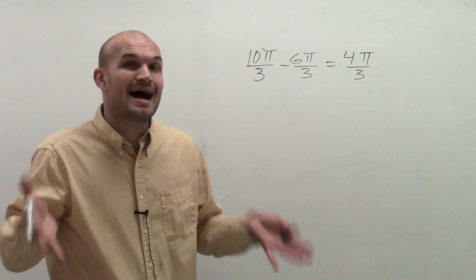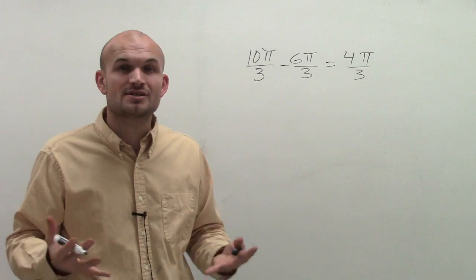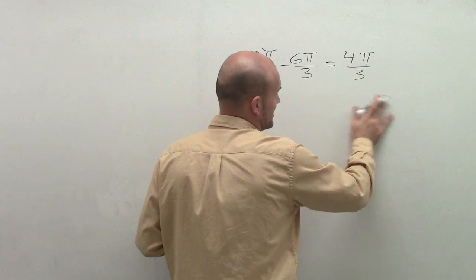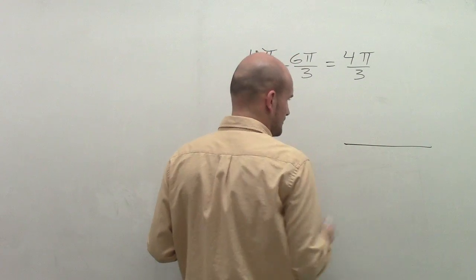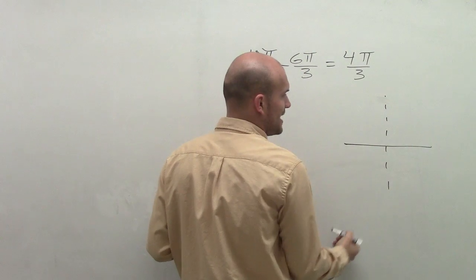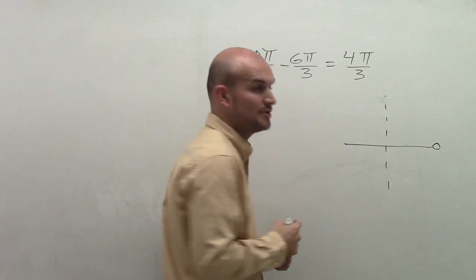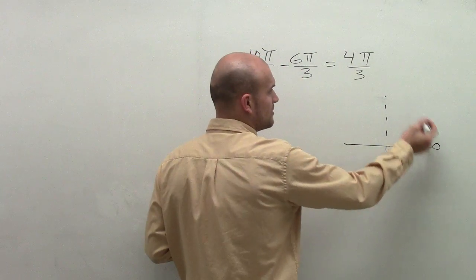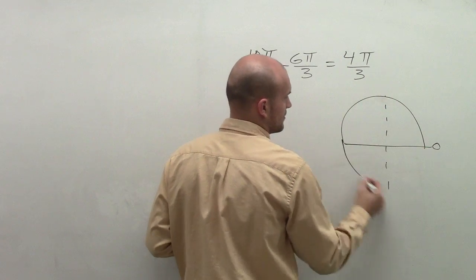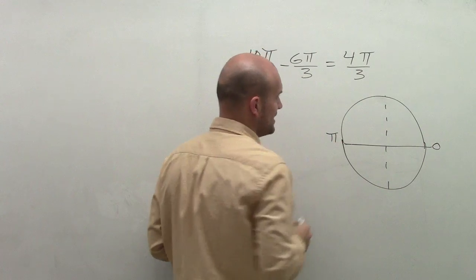So let's take a coordinate plane and let's say we have an angle. Here would be the y-axis. Now, if my angle hasn't moved at all, that would be 0. And then what we talked about when dealing with radians, halfway around the circle is what we call π radians.